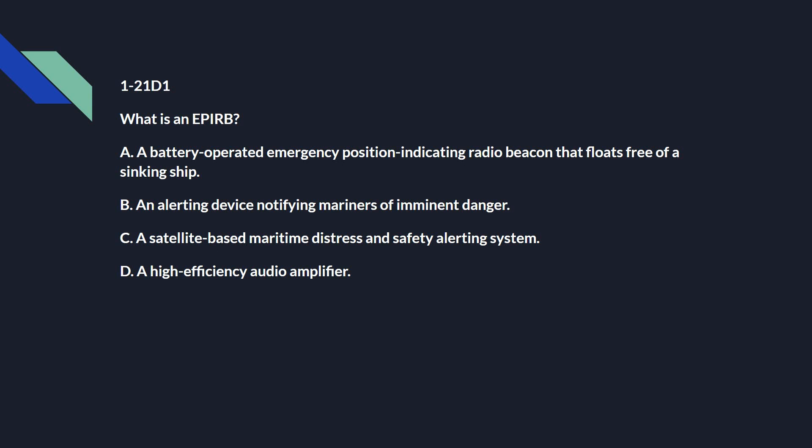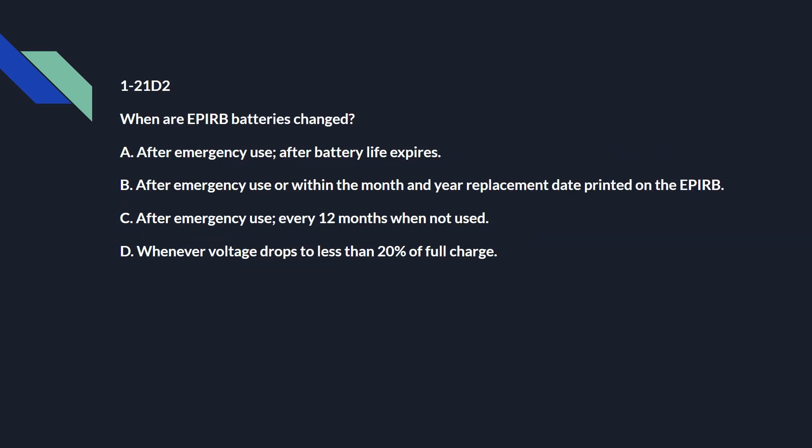1-21 Delta 1: What is an EPIRB? And that is A: a battery-operated emergency position indicating radio beacon that floats free of a sinking ship. 1-21 Delta 2: When are EPIRB batteries changed? B: after emergency use or within the month and year replacement date printed on the EPIRB.